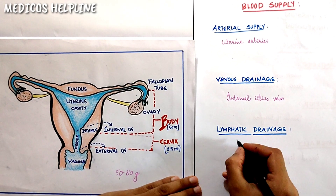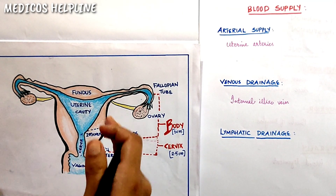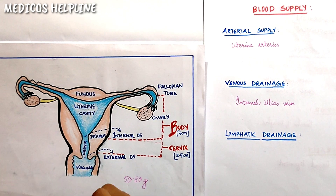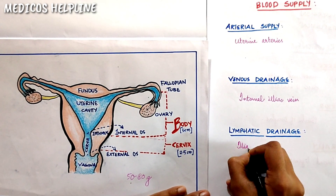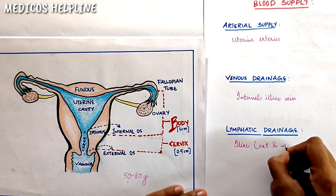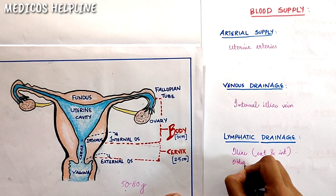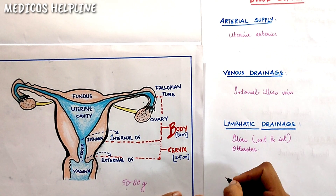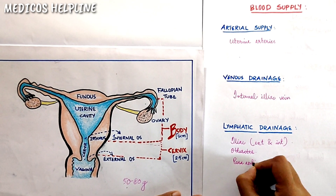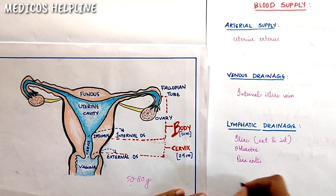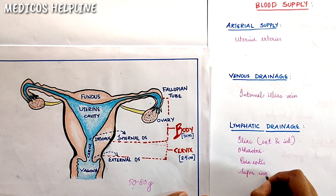The uterus is drained by a group of lymph nodes. The first is the iliac lymph nodes, which includes both the external and internal iliac lymph nodes. The second is the obturator lymph node. The third is the paraaortic lymph node. And finally, the superficial inguinal lymph node.